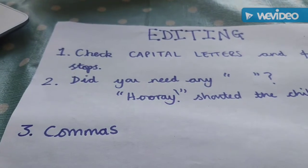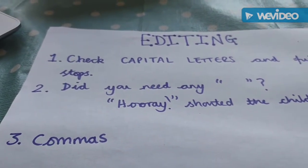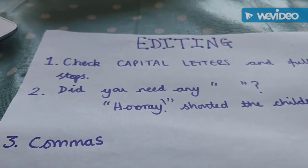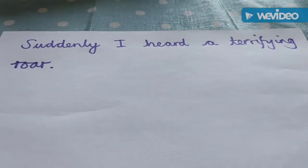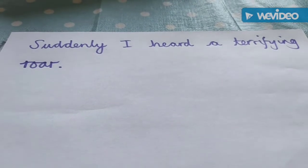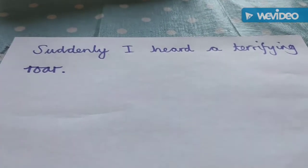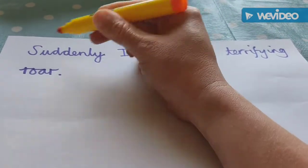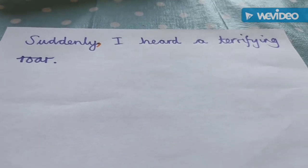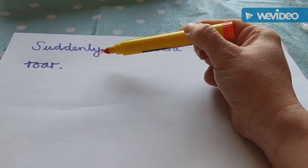The third part is commas. This leads on from the work we did on Tuesday about putting commas after adverbs at the beginning of sentences. So if you started a sentence with an adverb — like 'Suddenly, I heard a terrifying roar' — you need to put a little comma immediately after the adverb. So there's our adverb 'suddenly,' and immediately after it goes a little comma. Go through your writing, see if you've used any adverbs at the beginning of a sentence, and if you have, put a little comma just after the adverb.